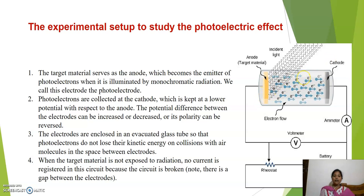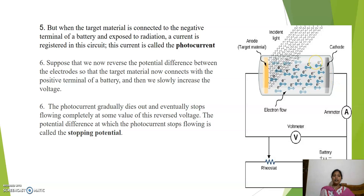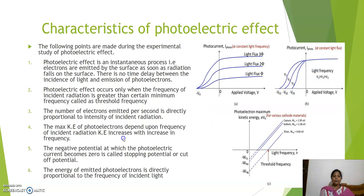When the target material is not exposed to radiation, there is no current in the circuit — it is essentially a broken circuit. When the target material is connected to the negative terminal of the battery and exposed to radiation, a current called photocurrent is registered in the circuit. If you reverse the potential difference between the two electrodes and connect the positive terminal of the battery, the photocurrent gradually decreases and eventually stops. The potential difference at which the photocurrent stops flowing is called the stopping potential.